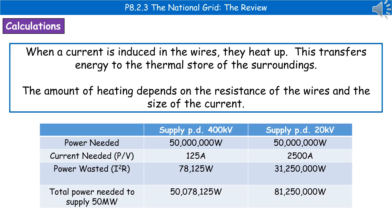When current is induced in the wires they heat up, transferring energy to the thermal store of the surroundings. The amount of heating depends on the resistance of the wires and the size of the current.